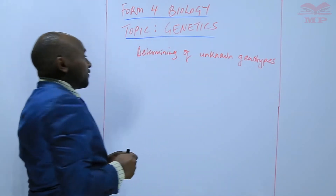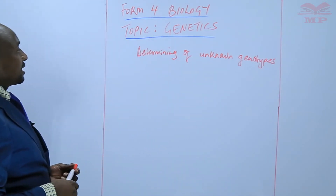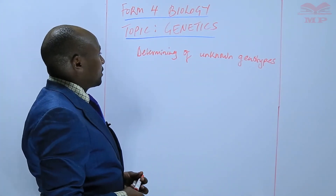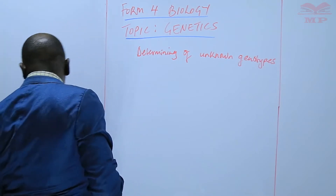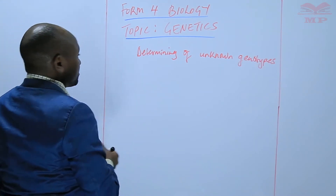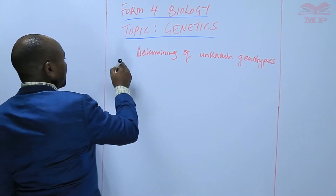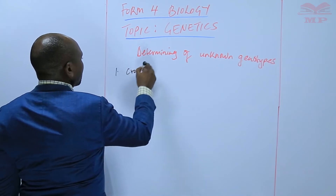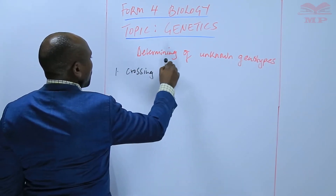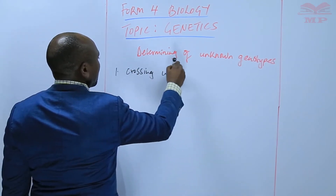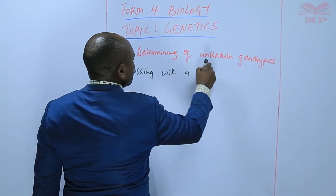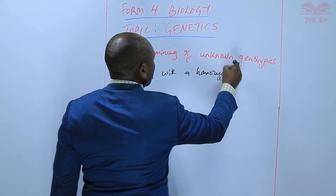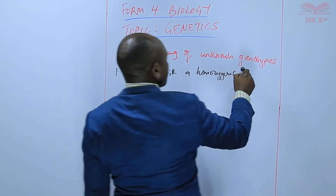So one of the ways of determining an unknown genotype is by doing something called crossing with a homozygous recessive.